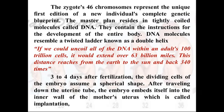A very interesting fact: if we could uncoil all of the DNA — that double helix — within an adult's 100 trillion cells, it would extend approximately 63 billion miles. To make an analogy, this distance reaches from the Earth to the Sun and back 340 times. So if we uncoil all the DNA into a single strand, that strand would travel from Earth to Sun 340 times.